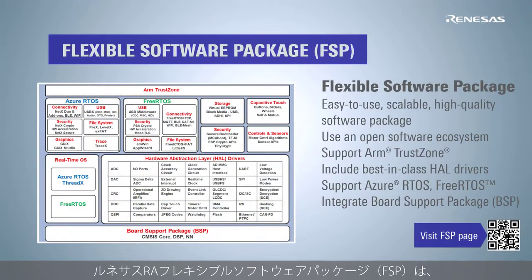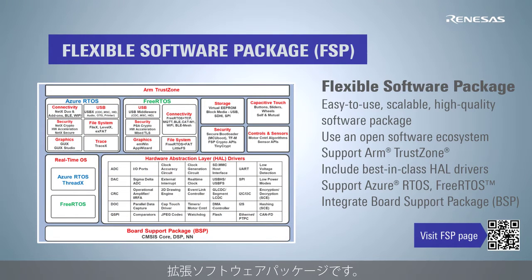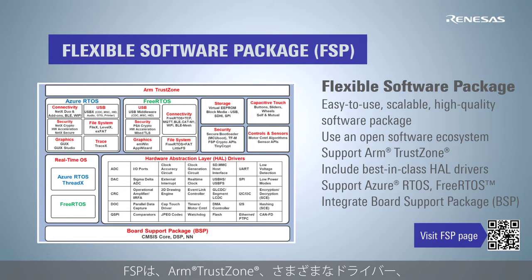The Renesas Flexible Software Package (FSP) is an enhanced software package designed to provide easy-to-use, scalable, high-quality software for embedded system designs using Renesas RA family microcontrollers. With the support of ARM TrustZone, FSP provides a quick and versatile way to build IoT devices using production-ready drivers.